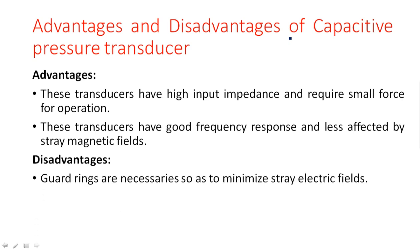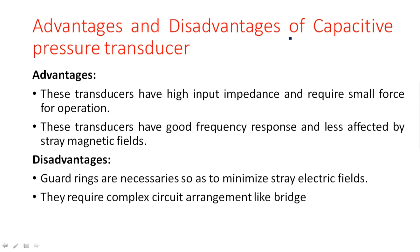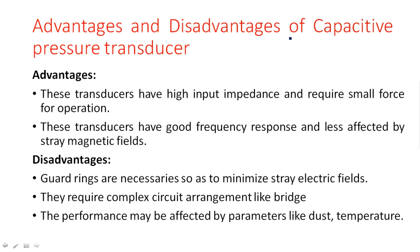Disadvantages: guard rings are necessary to minimize stray electric fields. Since the component used is a capacitor, stray electric fields may affect the result. They also require a complex circuit arrangement like a bridge. Temperature is always a parameter that affects measurements of any type, including pressure measurements. These are the different types of pressure measurement — thank you.